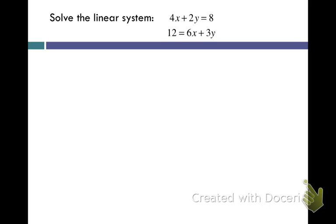An example of this would be this system where you have 4x plus 2y equals 8 and 12 equals 6x plus 3y. Now just looking at that, you may not see that these are the exact same line, and I'm going to solve it using substitution. I have to solve one of these for a variable. Well, they both have x and y terms that have coefficients, so neither one of these is going to be easier to solve than the other. So I'm just going to rewrite this first one and solve it for y.